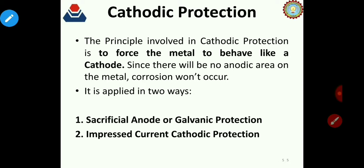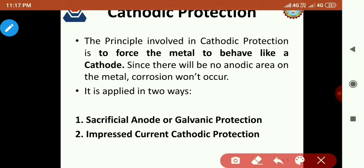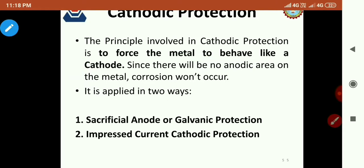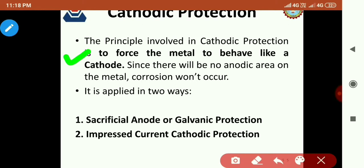Let us now move to this very important method — cathodic protection — which is in your course and very important for B.Tech. 1st year students. The basic principle of cathodic protection is to force the metal to behave like a cathode. When there is no anodic area, corrosion does not occur, so to prevent corrosion we try to make the metal behave like a cathode.